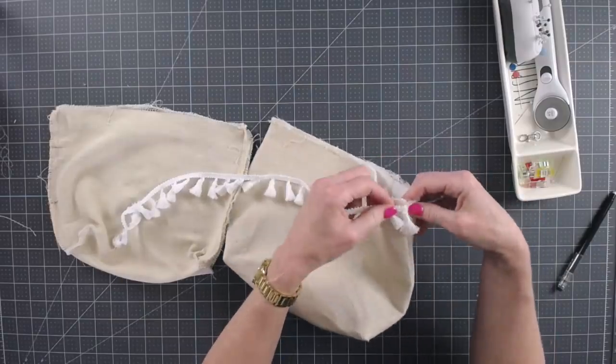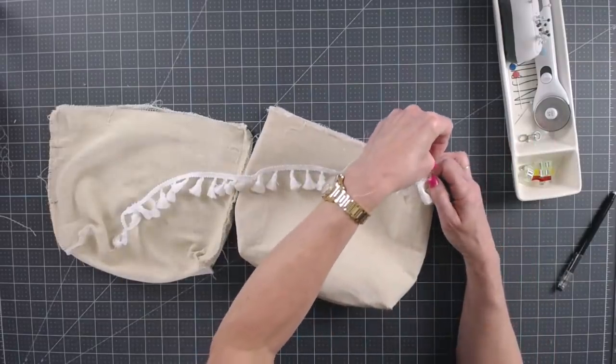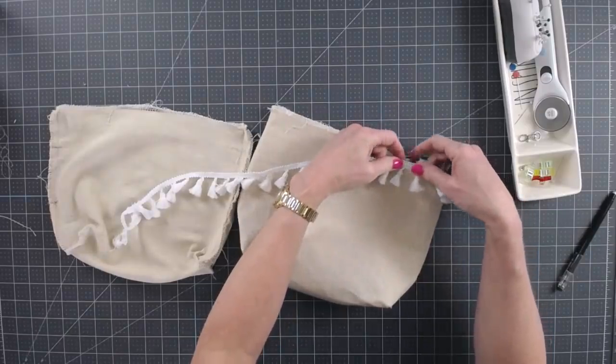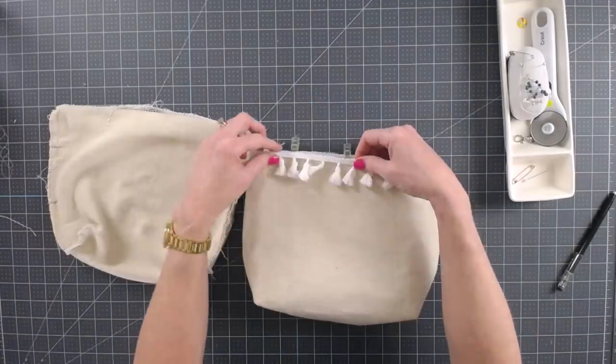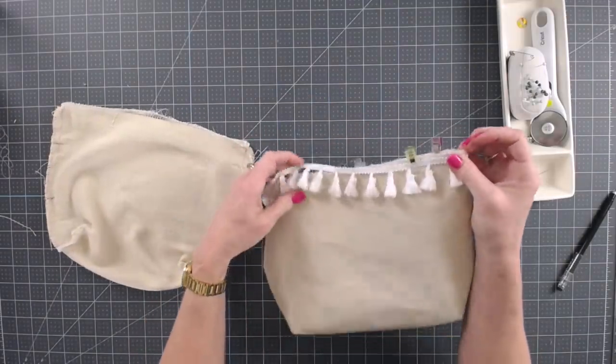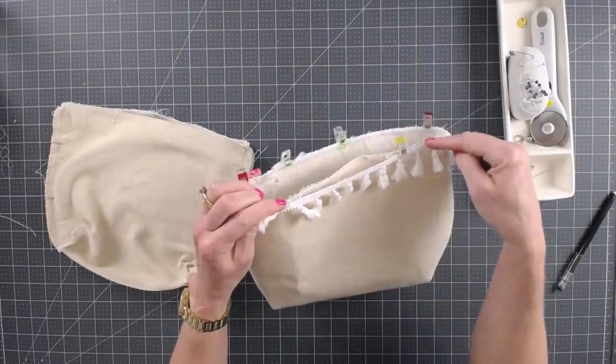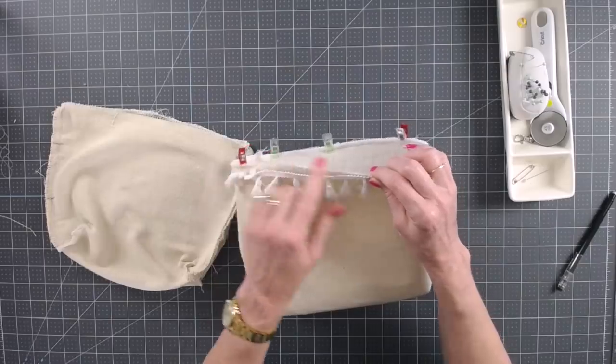But next we're going to apply our trim to the outer part. So I like to start on a side seam and just clip it into place right along that top seam, for that top edge. More clips. Go ahead and take that over to your sewing machine and apply your trim, all the way around as close to the edge as you can get. And again, if you have an edge that's fraying, you might want to zigzag that first.